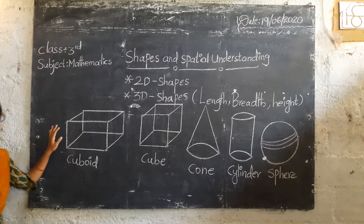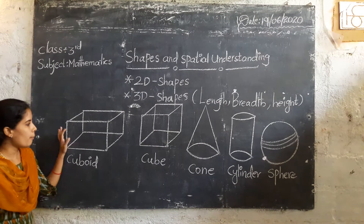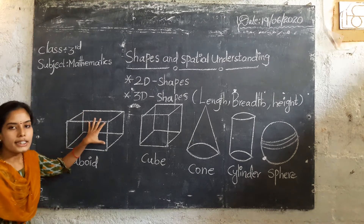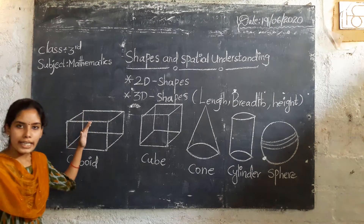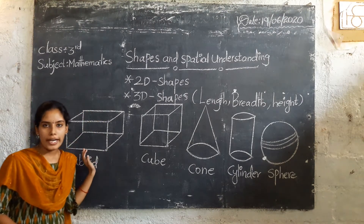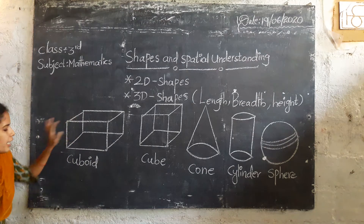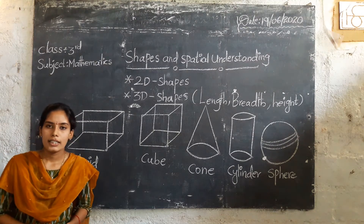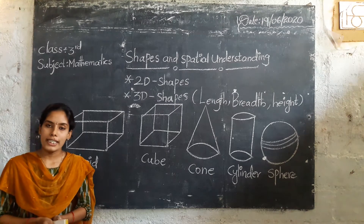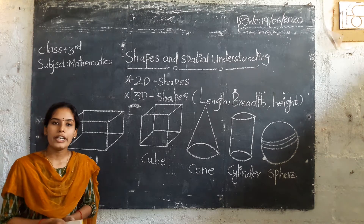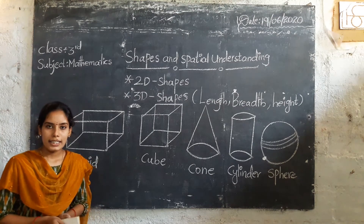Okay children, now we will discuss about cuboid. How to form a cuboid? Here we are using two rectangles. Two rectangles form a cuboid. Do you know where we are using this cuboid? Yes, cotton boxes which are in the shape of a cuboid.